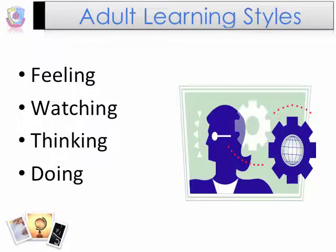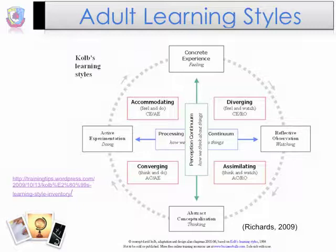Adults learn just like younger students — by feeling, watching, thinking, and doing. Just because we're older doesn't necessarily mean our way of learning has changed. Adults have more life experiences and knowledge to add to their learning, and one may be more flexible in how they learn due to the amount of time they've spent learning, but overall there's usually one way of learning that's better for an individual. It's your job as a trainer to meet those needs and creatively engage all learners. This is a great chart by David Richards regarding Kolb's learning style for adults, demonstrating the continuation of learning through feeling, watching, thinking, and doing.